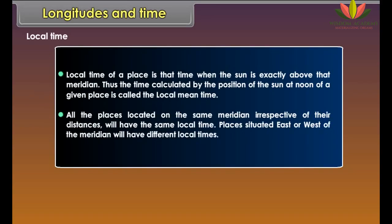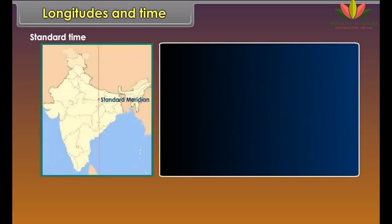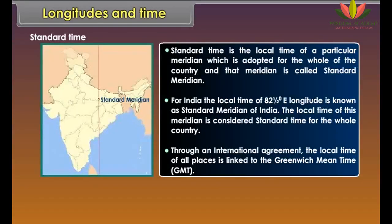This means each place has a different time of sunrise and sunset. The earth moves from west to east, that is why the time will be ahead of Greenwich in the east and behind Greenwich in the west. Local Time: Local time of a place is that time when the sun is exactly above that meridian. Thus, the time calculated by the position of the sun at noon of a given place is called the local mean time. All places located on the same meridian, irrespective of their distances, will have the same local time. Places situated east or west of the meridian will have different local times.